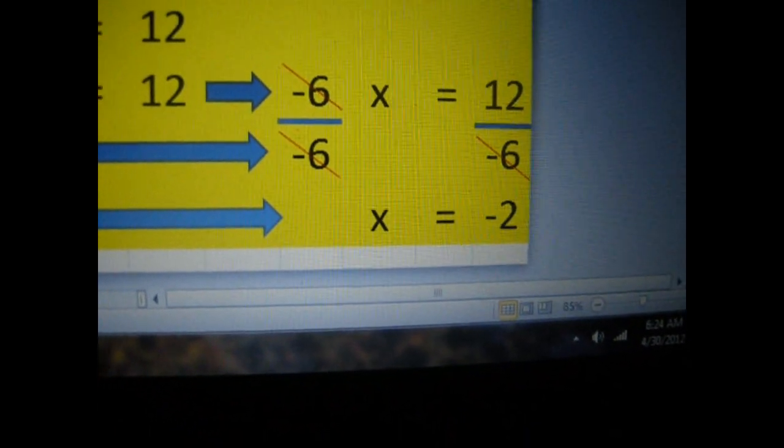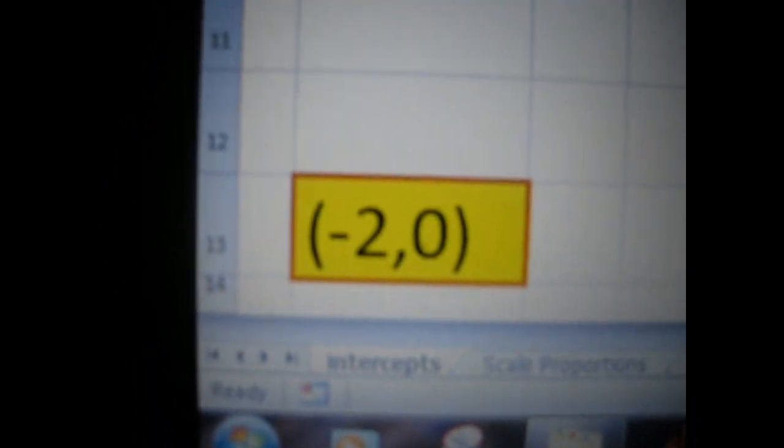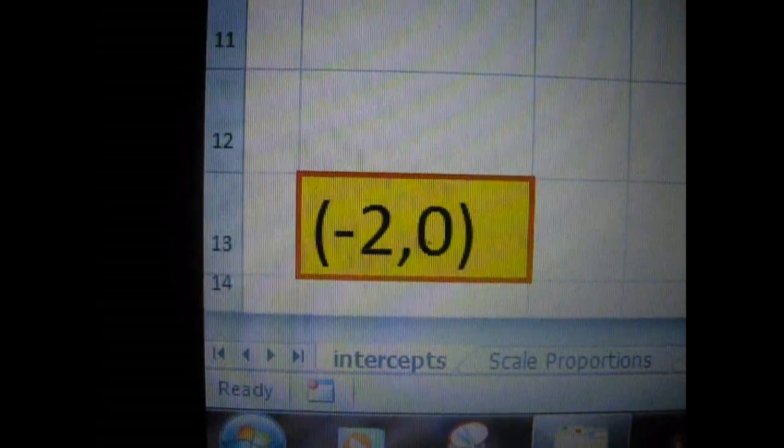substituting Y with 0, so X equals negative 2, so we have negative 2, 0 is for Y.